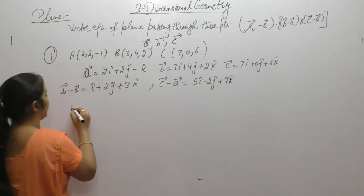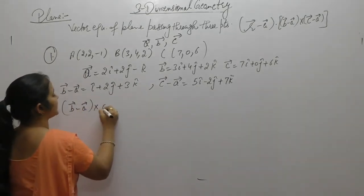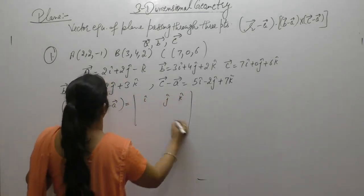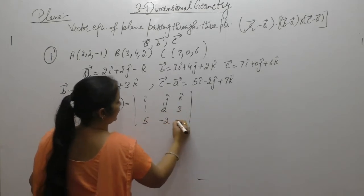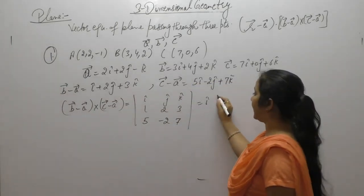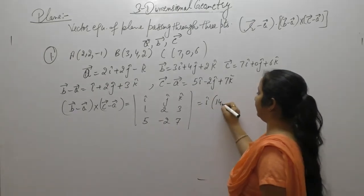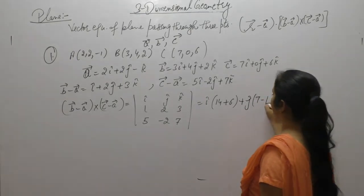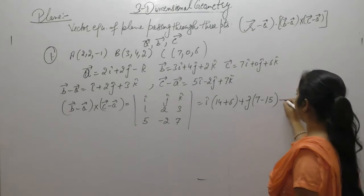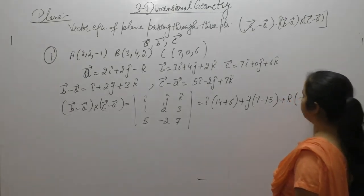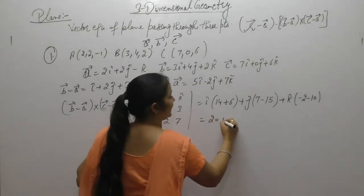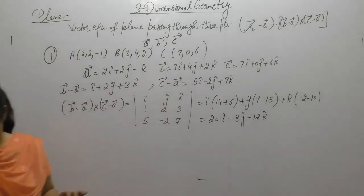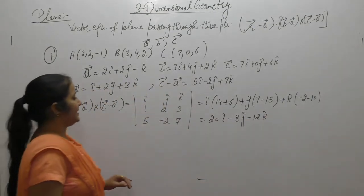Now we find the cross product of these vectors, (B-A) cross (C-A), using the determinant with i, j, k in the first row, then 1, 2, 3, then 5, -2, 7. This gives i(14+6) - j(7-15) + k(-2-10), resulting in 20i - 8j - 12k.